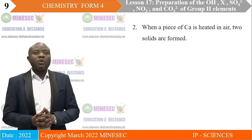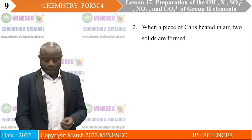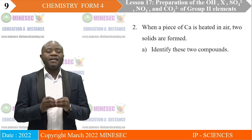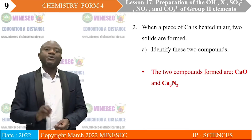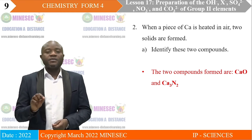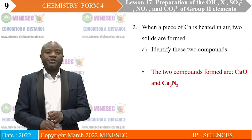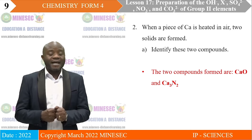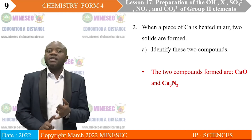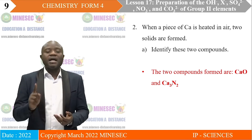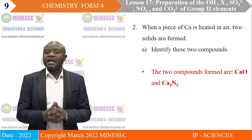Question number 2. When a piece of calcium is heated in air, two solids are formed. A. Identify these two compounds. When a Group 2 element is heated in air, the result is the formation of calcium oxide and calcium nitride. Oxygen is a part of air, and nitrogen is also a part of air, so when you heat calcium in air, it reacts with oxygen to form calcium oxide, and also reacts with nitrogen to form the nitride of the element.